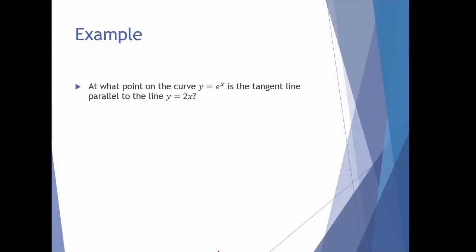Let's look at this example: at what point on the curve y equals e to the x is the tangent line parallel to the line y equals 2x? We're talking about a tangent line being parallel, which has to do with slope. So we need to talk about the slope of the tangent line, which means we're going to take the derivative. The derivative of y equals e to the x is e to the x, which represents the slope of every tangent line given an x coordinate.